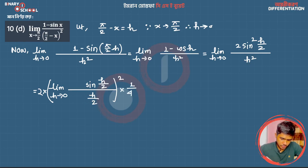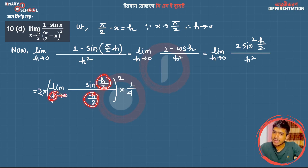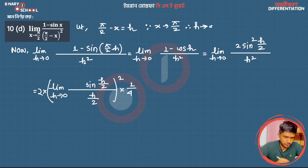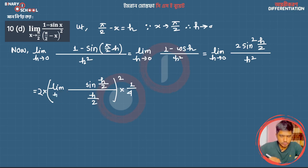As h/2 tends to 0, sin(x)/x formula gives 1. So h tends to 0, and h/2 tends to 0. Applying the standard limit sin(x)/x = 1, the result becomes 2 multiplied by (1/4), giving the final answer 1/2.